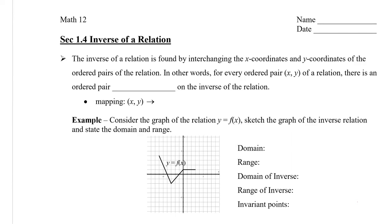In this video, we're going to take a look at the inverse of a relation, both graphically and also algebraically. To begin, the inverse can be found by interchanging the x-coordinates and the y-coordinates of the ordered pairs of the relation. So if I have an ordered pair (x, y), to get the inverse ordered pair, we swap them — so instead of (x, y), I'm going to have (y, x).